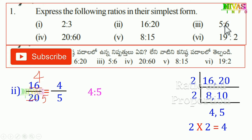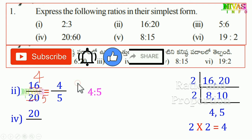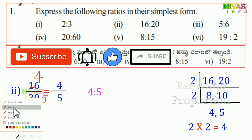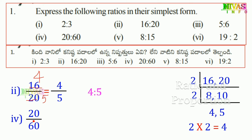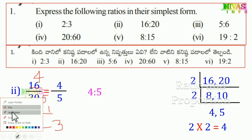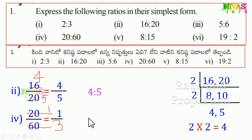Next, third problem: 20 and 60. We write 20 by 60. Dividing both by 20, we get 1 by 3. So the ratio is 1 to 3.